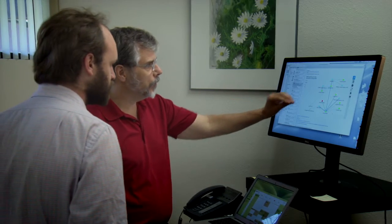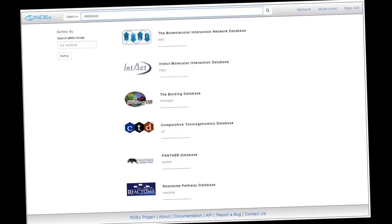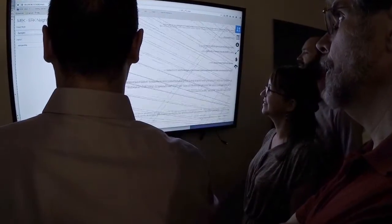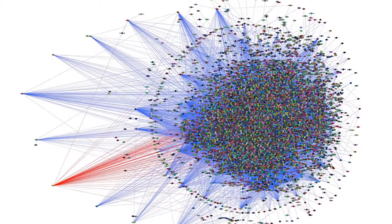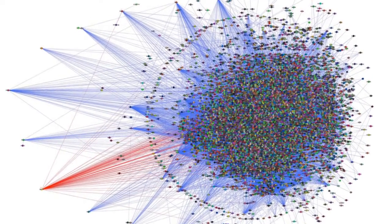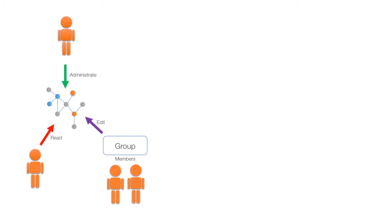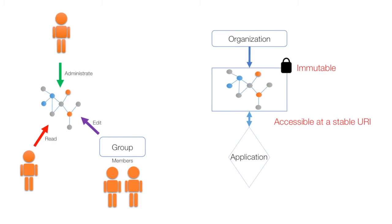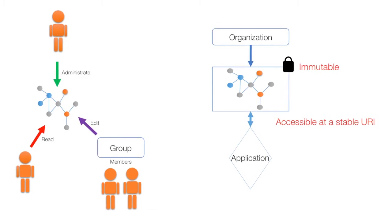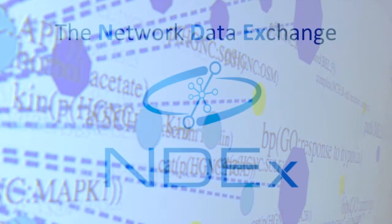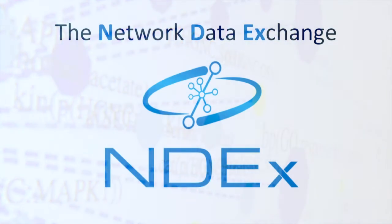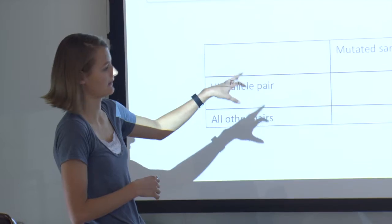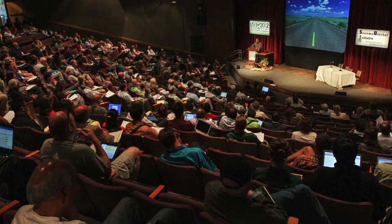NDEx creates a common access point and interface to a broad range of networks, whether they express molecular interactions, curated relationships from literature, or the outputs of systematic analysis of big data. Individual users and organizations can use it as a collaboration and discussion medium, while commercial and academic publishers can use NDEx as a distribution mechanism. These features enable NDEx to be used at each stage of the scientific process, from initial experimentation, to collaboration with colleagues, to the final public dissemination of results.